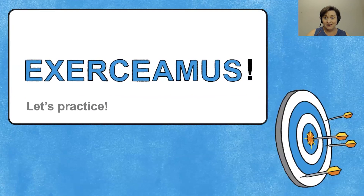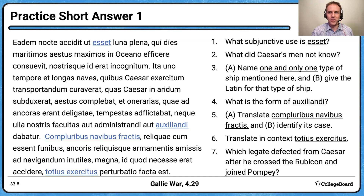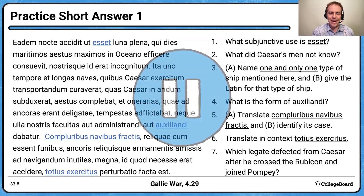Now it's time to practice — 'nunc tempus est exercare.' Just like yesterday we had two translation practices, we have two short answer practices of about seven questions each, which is about how many you'll see on the AP exam. Pause the video now and spend about 10 minutes working through all seven questions. We will still be here when you get back. Practice always goes a long way. Unpause and check your answers when you're done.